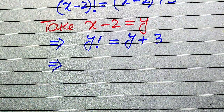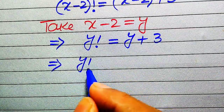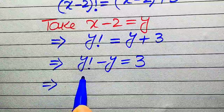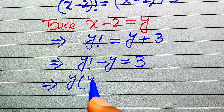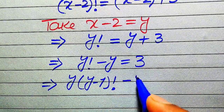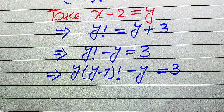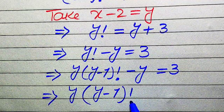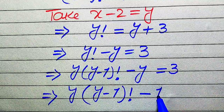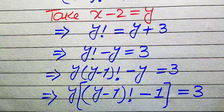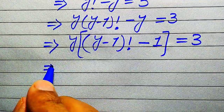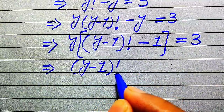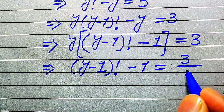In the next step, we move y from the right hand side to the left hand side, giving y factorial minus y equals 3. We expand y factorial as y times (y minus 1) factorial, so the equation becomes y times (y minus 1) factorial minus y equals 3. Taking y as a common factor gives y times [(y minus 1) factorial minus 1] equals 3. Dividing both sides by y gives (y minus 1) factorial minus 1 equals 3 divided by y.